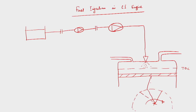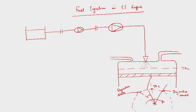This is TDC, and here is the point where injection ends and here injection starts. This angle is 10 to 20 degrees before TDC, and the total angle of injection is near about 50 degrees. Injection starts when the piston is slightly away from TDC - that is the first phase of combustion.